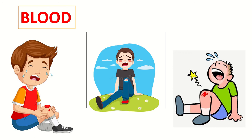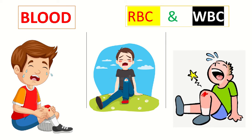Hello friends, we all get hurt while playing, right? And blood comes out. The blood is basically red in color because of the red blood cells present in the blood. The red blood cells are red in color. There are also some other type of cells present in the blood which are known as white blood cells. White blood cells are white in color, but red blood cells are more than white blood cells, so the color of blood is red. The blood circulates in our body, but do you know how it travels?